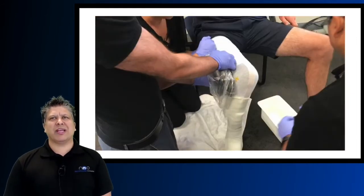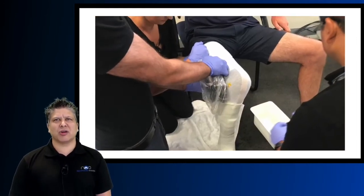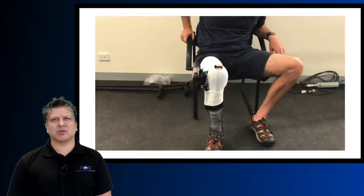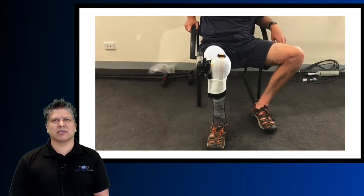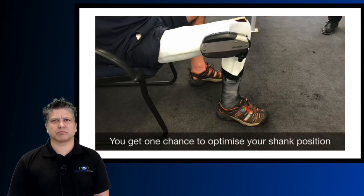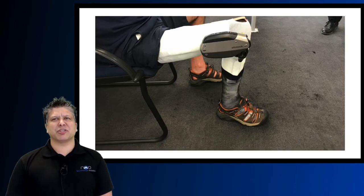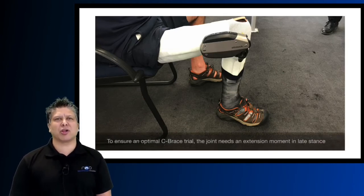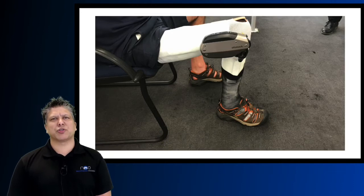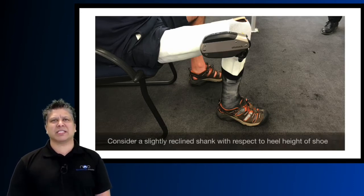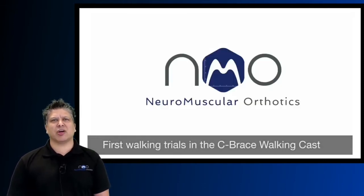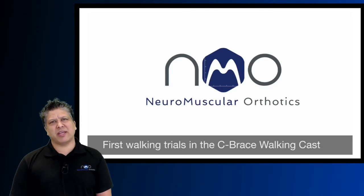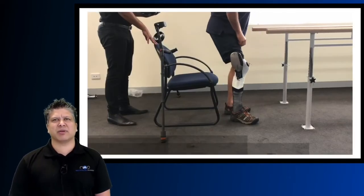The laser pointer greatly assists in knee joint alignment, and keep this on for the duration. There we have the completed walking cast with the shoe over the top. You get one chance to optimise your shank position so really think about your client prior to wrapping. Remember that for an optimal C-Brace control you need an extension moment in the joint in late stance. Consider a slightly reclined shank with respect to the heel height of the shoe, and if needed use an internal heel raise to bring the tibia forward.